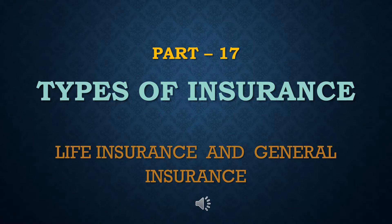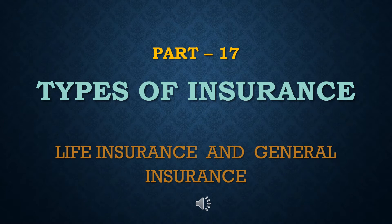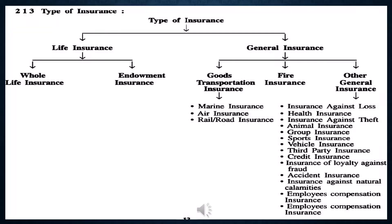Part 17: Types of insurance. There are mainly two types of insurance: life insurance and general insurance. Insurance refers to a contractual arrangement in which one party, the insurance company or insurer, agrees to compensate the loss or damage sustained by another party, the insured, by paying a definite amount in exchange for an adequate consideration called premium.